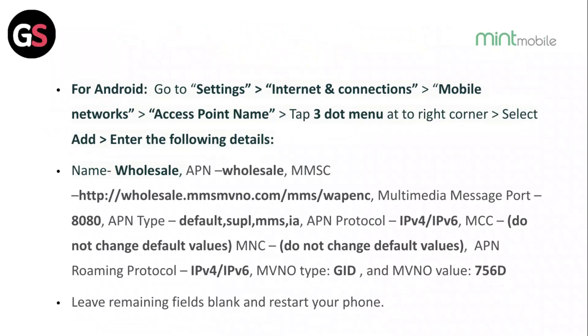For Android, go to Settings, then Internet and Connection, then Mobile Network and Access Point Name. Tap the 3-dot menu in the top right corner, select Add, and enter the following details. Leave the remaining fields blank and restart your phone.